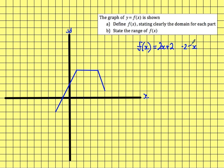So values of x from minus 2 — minus 2 being included — going up to 1. The second part is this bit here, so f(x) equals 4, because that's the line y equals 4. And that's from 1 up to 4, where 1 is the included value.